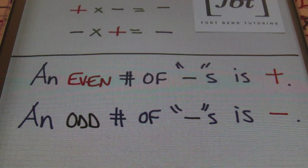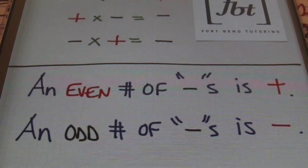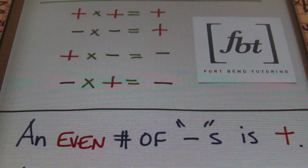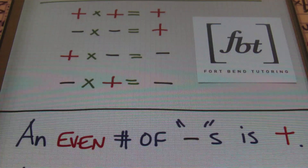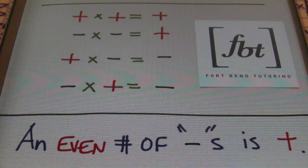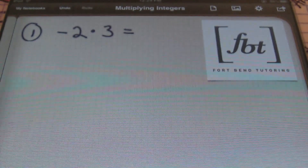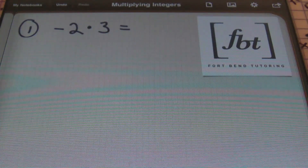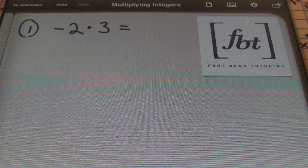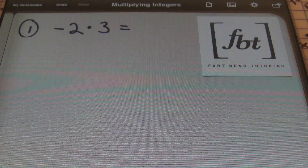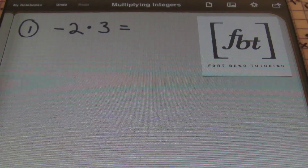So remember: a positive times a positive equals a positive, a negative times a negative equals a positive, a positive times a negative equals a negative, and a negative times a positive equals a negative. Let's look at some problems. So in problem number one, we have negative two times three. Focus on the sign first — the sign is just as important as the number as far as the answer is concerned.